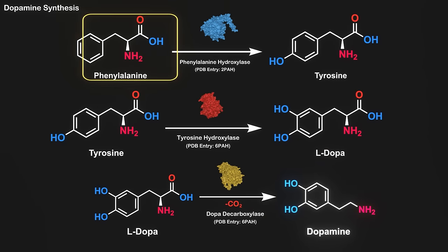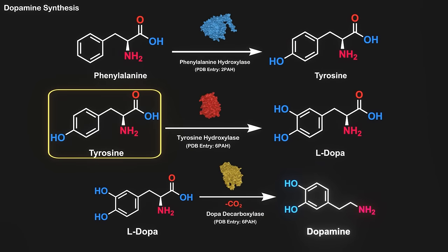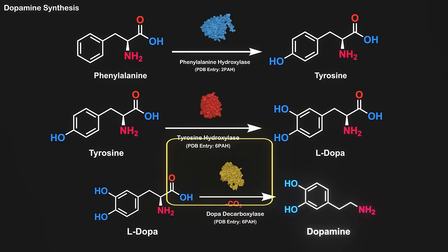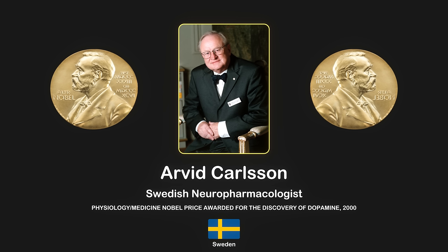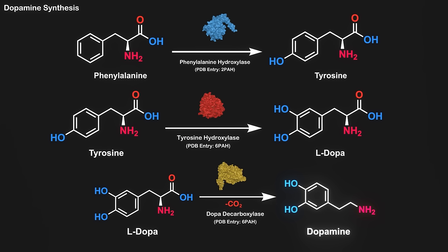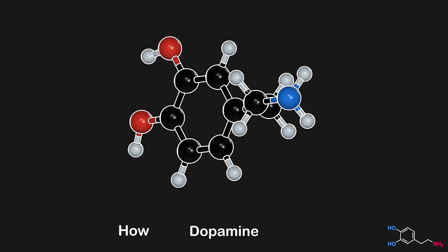After phenylalanine is converted to tyrosine, tyrosine gets hydroxylated into L-DOPA, and finally L-DOPA is decarboxylated to afford dopamine. So that's the significance of dopamine, it won someone a Nobel Prize, it's made in our body from one of the essential amino acids, but how does dopamine work?